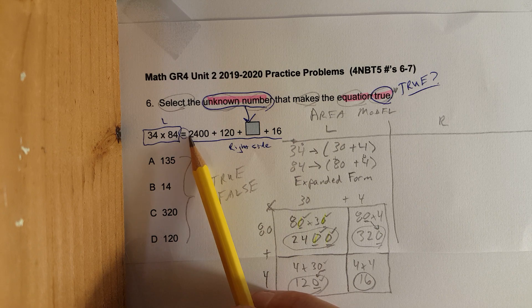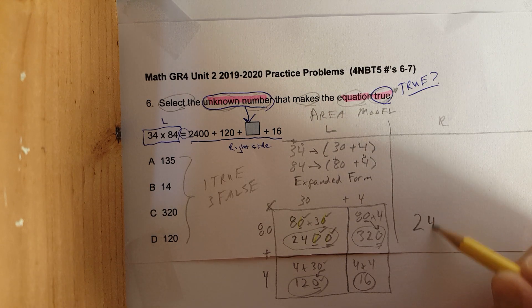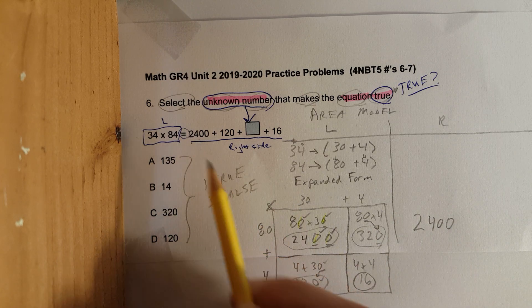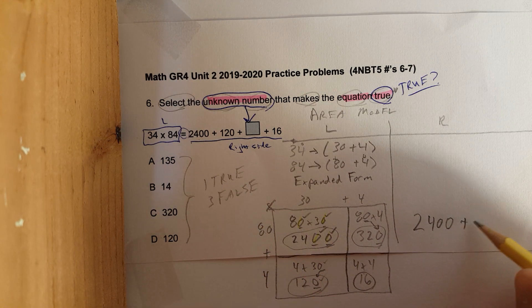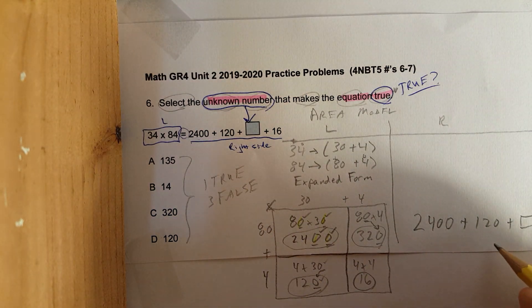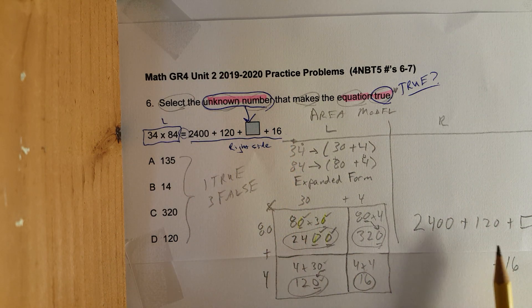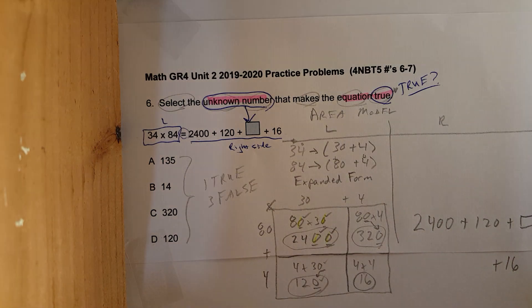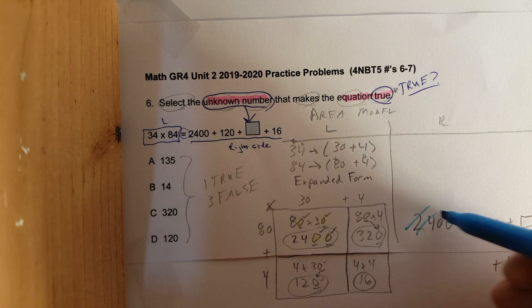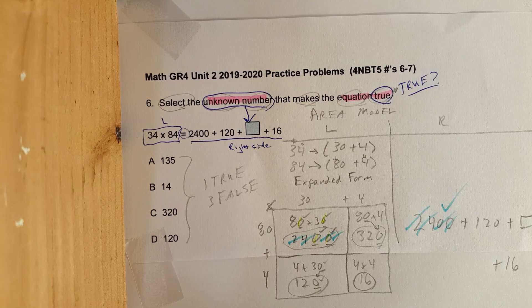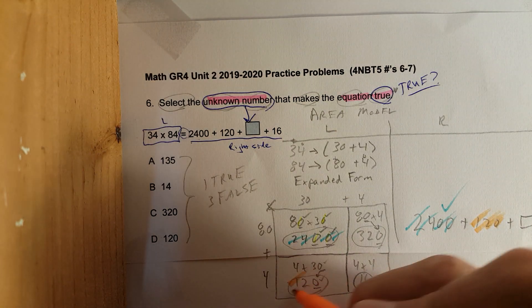Now let's go to the right side of the equation. I'll write these numbers here so you can see them: 2400 plus 120 plus the unknown number, plus 16. Now I'm going to color-code and match each value. Two thousand four hundred — check. 120 — check.